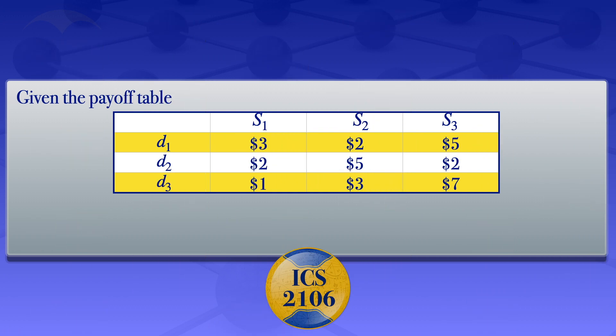Given the payoff table which has decisions D1, D2, and D3, states of nature S1, S2, and S3, and the probability of state of nature S1 is 0.2, the probability of state of nature S2 is 0.5, and the probability of state of nature S3 is 0.3.